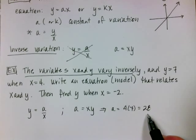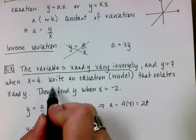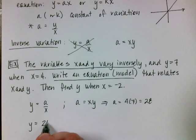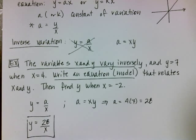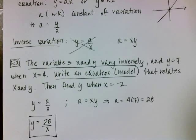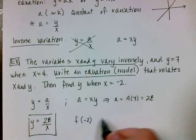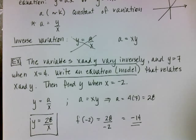And so remember it says when you have to write a model, that means I need to see the finished model. So it's going to be 28 over x. So then the next part says then find y when x is negative 2. So technically I want to do f of negative 2, and that's going to equal 28 divided by negative 2, and that's going to equal negative 14. And then that would be my solution.